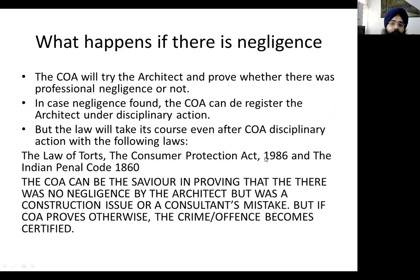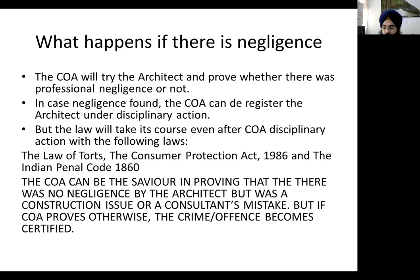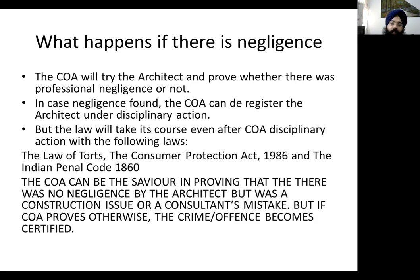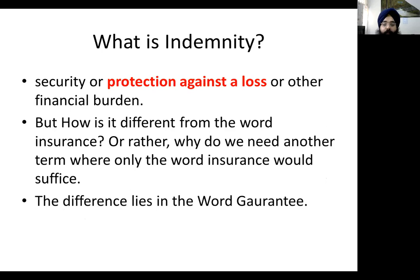What happens if there is negligence? The Council of Architecture (CoA) will first try to prove whether there was professional negligence. If the CoA finds no negligence, the architect cannot be tried under any further laws. But if the CoA finds negligence, it will take disciplinary action by deregistering the architect — and that certification will hold in other courts, where the Law of Torts, Consumer Protection Act, Indian Penal Code, and criminal and civil suits can be filed against the architect.